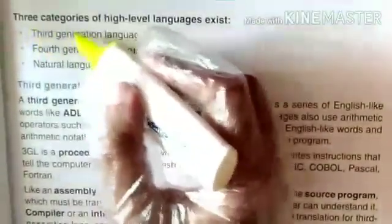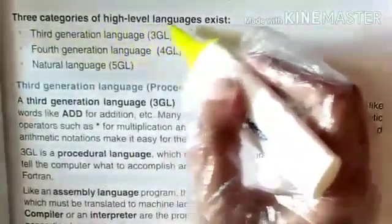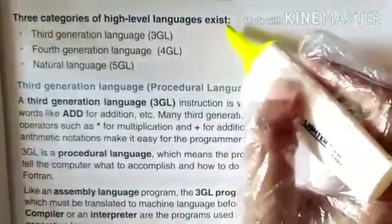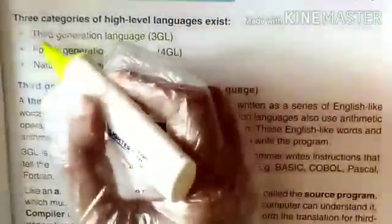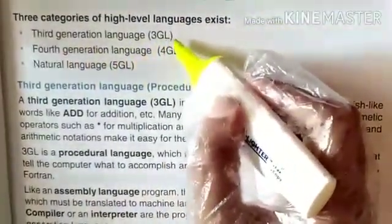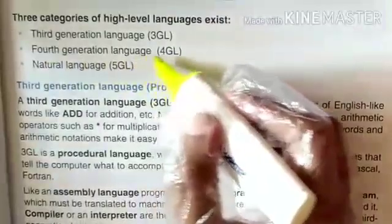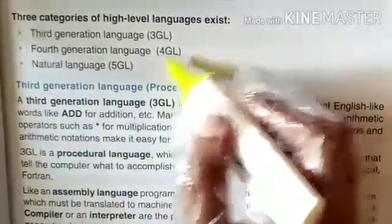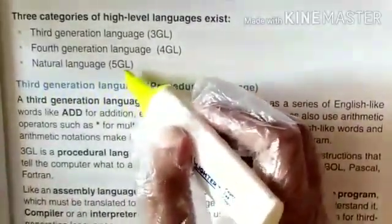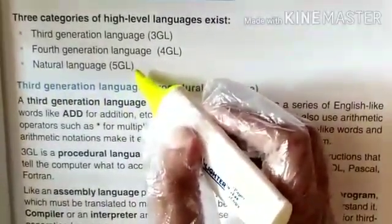Three categories of high-level languages exist: Third Generation Language (3GL), Fourth Generation Language (4GL), and Natural Language (5GL).